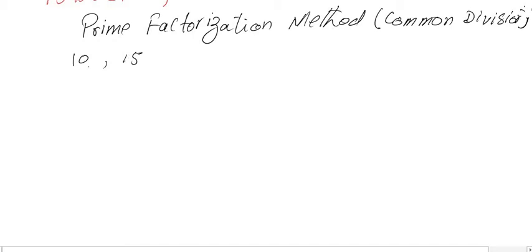For example, if we have the numbers 10 and 15, finding the listing method would give a very long list. Instead, we'll use the prime factorization method or the common divisor method. This method has two ways: either find the prime factors of each number separately, or put them together.